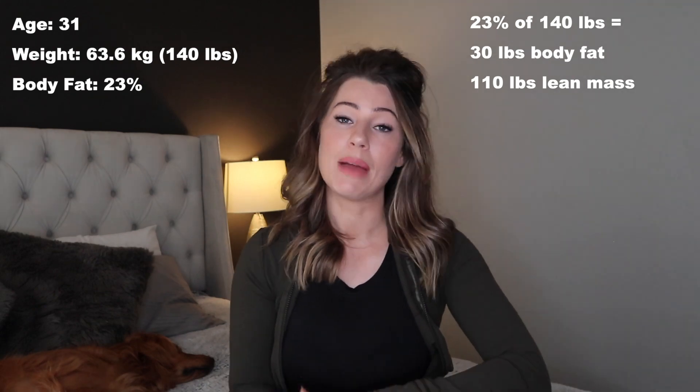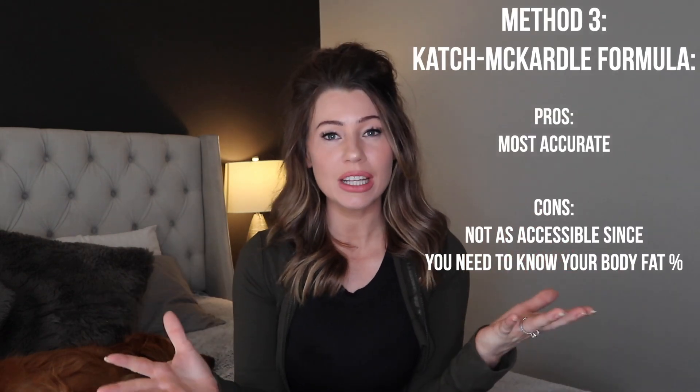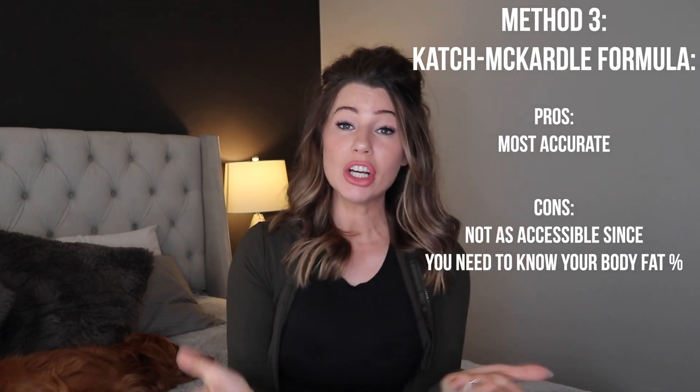For the calculation, you need your age, body weight, and body fat percentage. I'm 31, weigh 140 pounds, and estimating 23% body fat — that means lean body mass of 110 pounds and body fat of 30 pounds. In this method, you multiply your lean body mass in kilos by 21.6, giving a BMR of approximately 1,450 calories. Multiplying by 1.55 for moderate activity gives 2,248 maintenance calories.